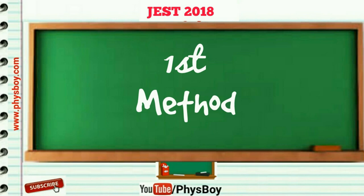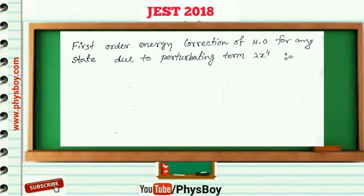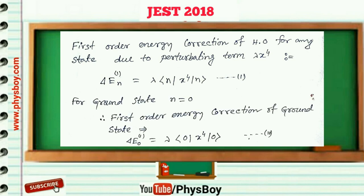Let me first write the first-order energy correction of harmonic oscillator for any state due to the perturbation term lambda x to the power 4. Delta-E_n is equal to lambda times bra-n x to the power 4 ket-n. Let's call this equation 1. For the ground state n is equal to 0, so from equation 1 you can write delta-E0 equal to lambda bra-0 x to the power 4 ket-0. This is equation 2.